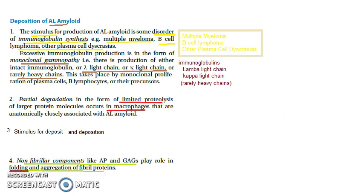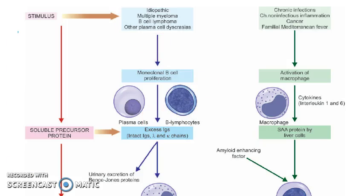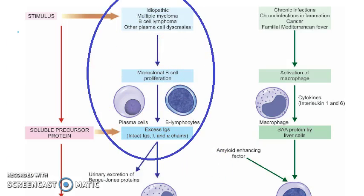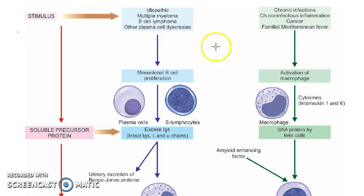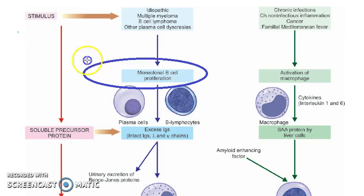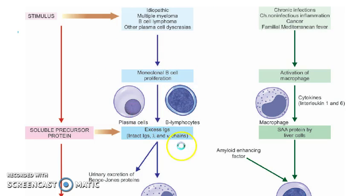Deposition of AL and AA amyloid. There is a diagram which you can draw. This one is actually the AL. How AL is happening? Multiple myeloma, B cell lymphoma, and plasma cell dyscrasias are the stimulus for the production of excess immunoglobulins.